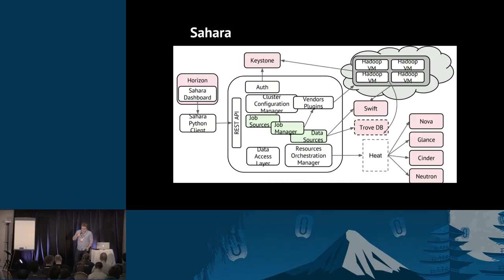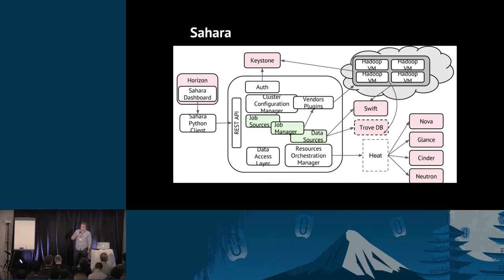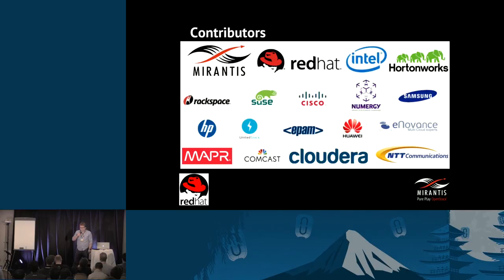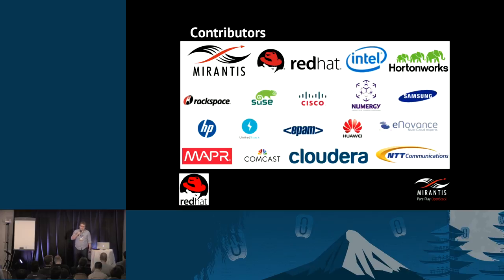For external data storage, Sahara uses Swift as the default object store in OpenStack and integrates with Swift to enable it as a file system for Hadoop, so it can be transparently used as a file system from Hadoop jobs.